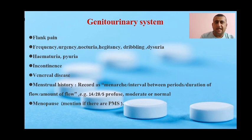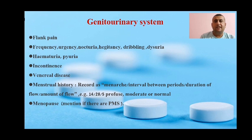Record menstrual history as: when the patient developed menarche, what is the interval between periods, duration of flow, and amount of flow. For example, a patient developed menarche at 14 years of age, cycle is 28 days, and flow is for 5 days which can be profuse, moderate, or normal. If the patient has already developed menopause, mention whether there is perimenopausal or postmenopausal syndrome.